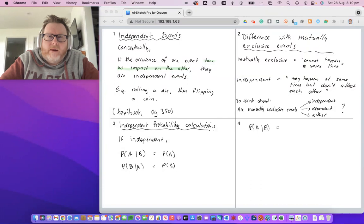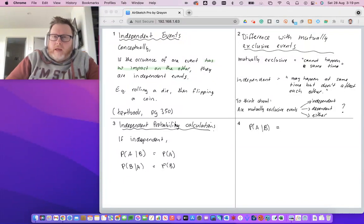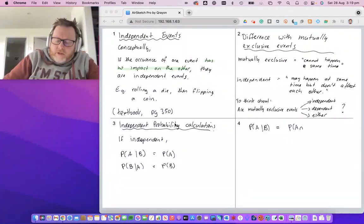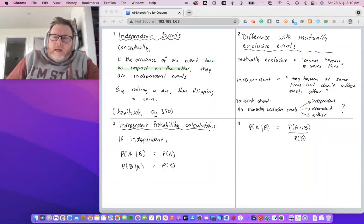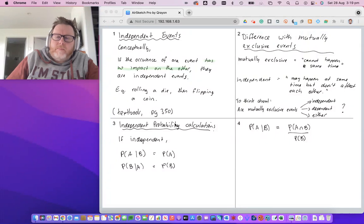Pause the video, write it down, look it up. Hopefully you looked it up and got this: the calculation, the formula, is the probability of A intersect B over the probability of B.